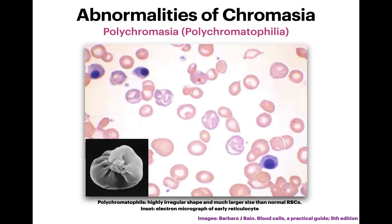This image is from a case of sickle cell anemia in acute hemolytic crisis. You can see very irregularly shaped polychromatophilic cells, corresponding to the electron micrograph of an immature reticulocyte. Some NRBCs are also present. These polychromatophils are almost two to three times larger than normal RBCs with very irregular shapes.